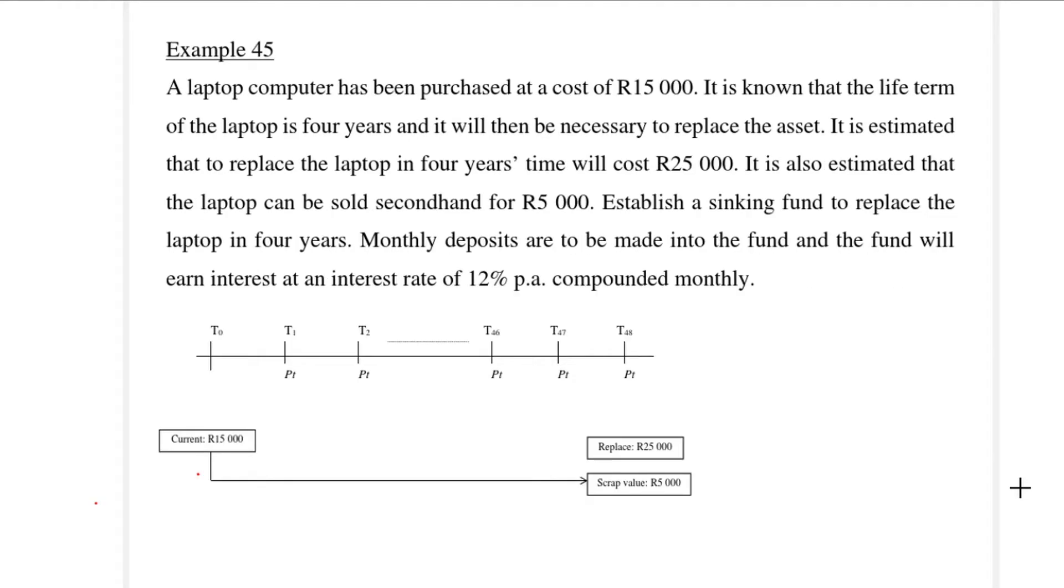Let's look at Example 45. A laptop computer has been purchased at a cost of R15,000. It is known that the life term of this laptop is four years and then it will be necessary to replace it. It is estimated that to replace the laptop will cost us R25,000. It's also been estimated that the laptop can then be sold secondhand for R5,000, and we want to establish a sinking fund to replace the laptop in four years. Monthly deposits are to be made into the fund and the fund will earn interest at an interest rate of 12% per annum compounded monthly. You can see this situation illustrated on the timeline. The current value of the computer is R15,000, the replacement cost is R25,000, but we can sell the old computer for R5,000, so in effect we will need R20,000 in four years time.